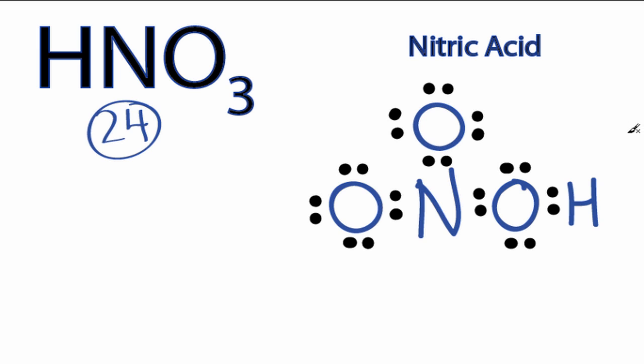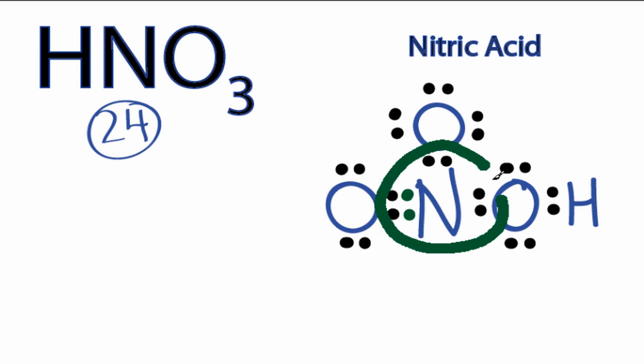All of the oxygens have 8. The hydrogen here has 2 and that's all it needs. But the nitrogen in the center only has 6. So we'll take and move these two valence electrons to form a double bond. And by doing that, nitrogen now has 8.